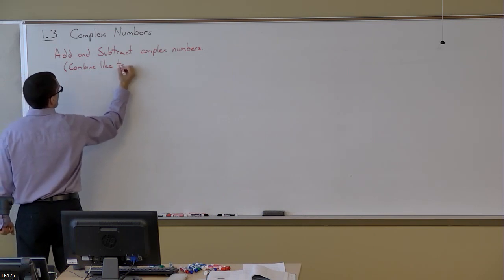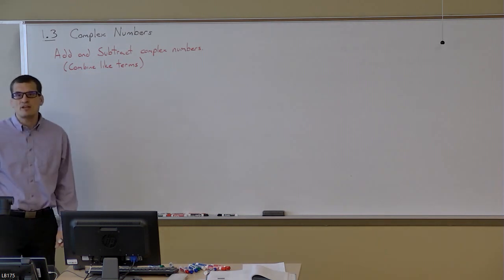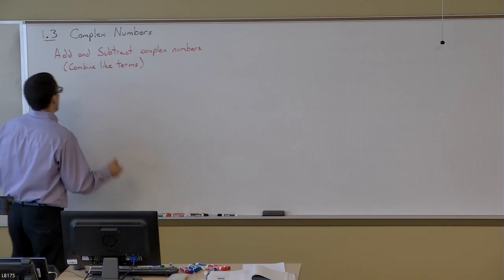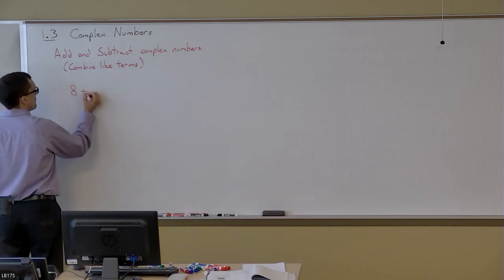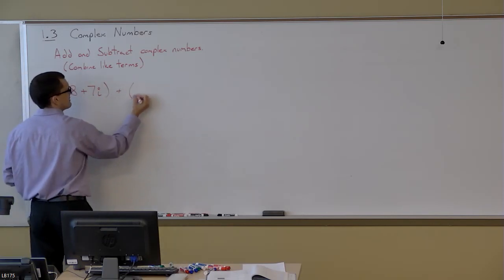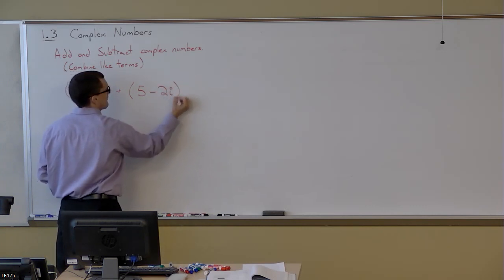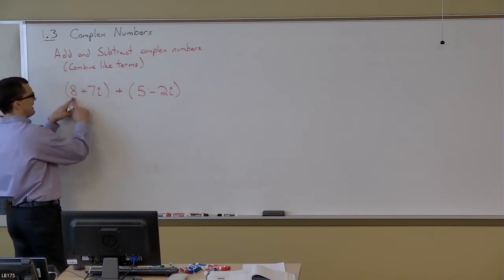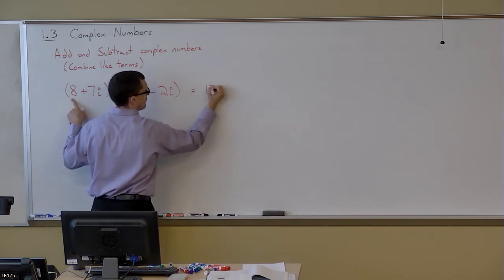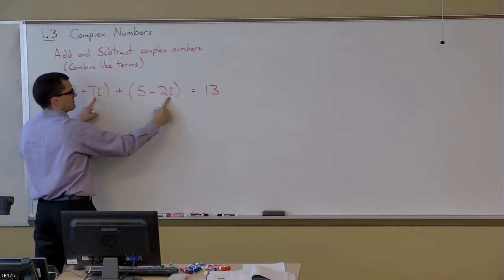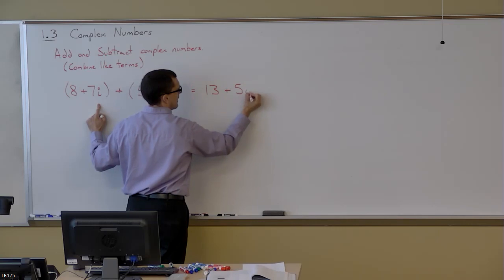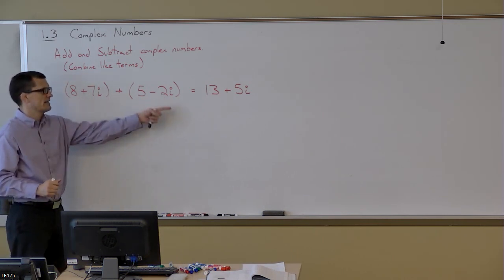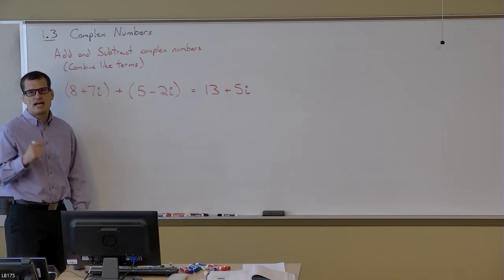When we're talking about like terms with complex numbers, we're talking about the real parts combining and the imaginary parts combining. If we have something like (8+7i) and I want to add that to (5-2i), what I do is I say 8+5 will give me 13, and then 7i-2i will give me 5i. So the real parts are alike and the imaginary parts are alike. Since we're adding them, we just add the real parts together, add the imaginary parts together.